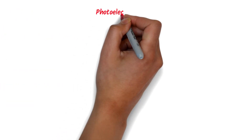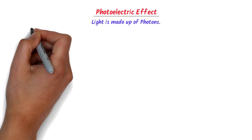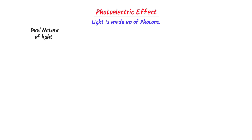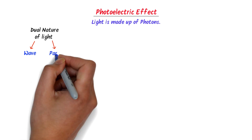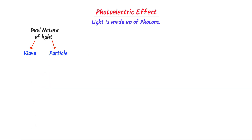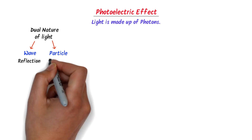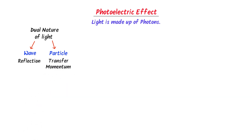Secondly, we should also learn the photoelectric effect. We know that light is made up of photons, just like we human beings are made up of cells. Now according to the dual nature of light, light or photons can act as a wave and light or photons can act like a particle. For example, light or a photon is reflected when it hits any surface — so that is wave nature. Secondly, a photon transfers momentum during collision, like the one we learned in the previous example — so that is particle nature.